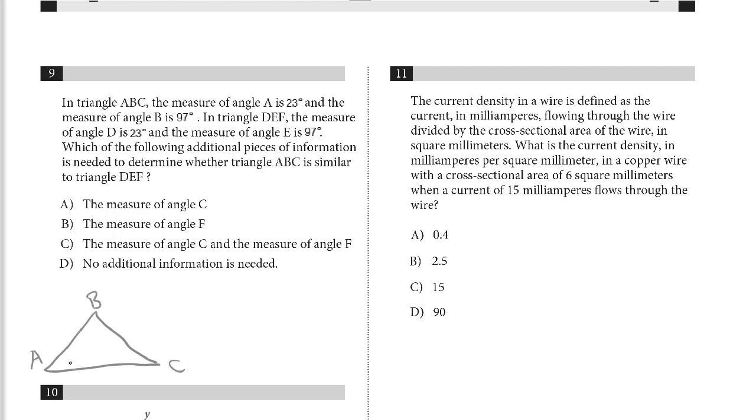A is 23 degrees. Angle B is 97 degrees. In triangle DEF, we're told D is, the angle measure is 23 degrees, and the angle measure of E is 97 degrees.